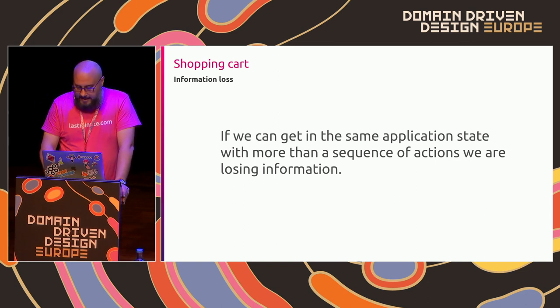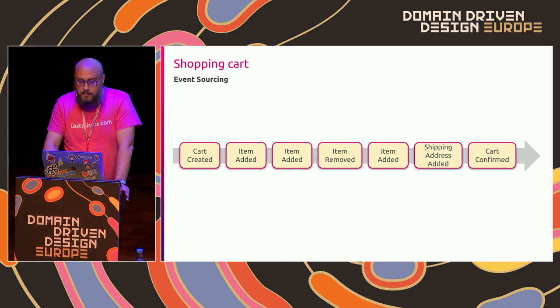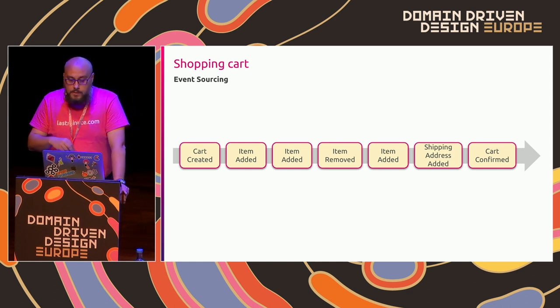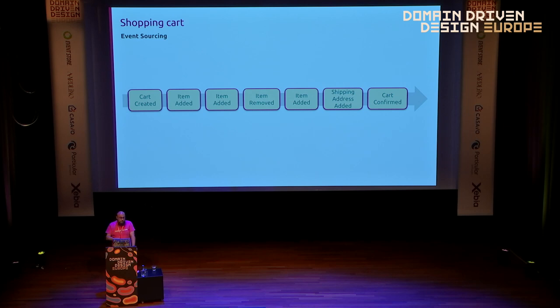There is a different way to tackle this kind of problem. What if instead of focusing on the state of the application and the shape that data should have, we focus on what happened in our system that led it to that state? Back to our example, it means that instead of focusing on a relational database structure containing the final state of our cart, we put the focus on what happened in the system.